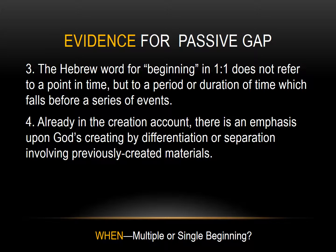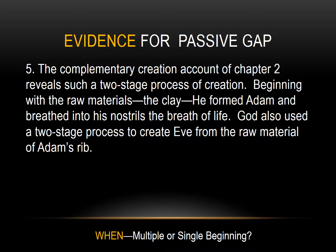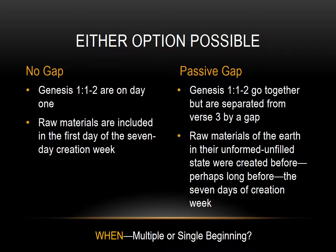In the creation account, there is an emphasis on God creating by separating previously created materials. The complementary creation account of chapter 2 reveals such a two-stage process: beginning with the raw material of clay, God formed Adam and breathed into his nostrils the breath of life. God also used a two-stage process to create Eve from the raw material of Adam's rib. While the author prefers the passive gap theory, he acknowledges a possible openness of Genesis 1:1 and 1:2 that allows for either option.